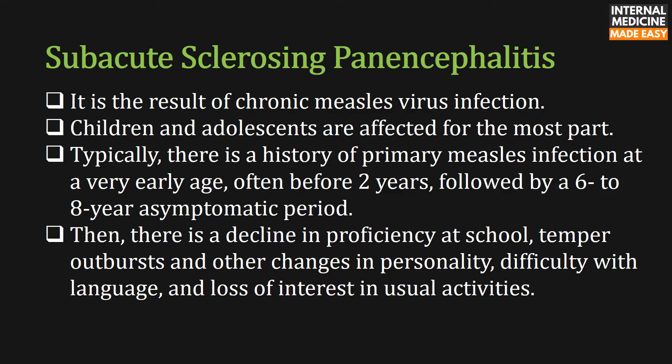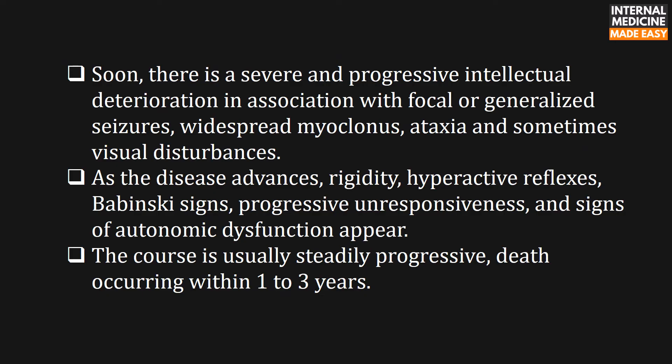It is the result of chronic measles virus infection. Children and adolescents are affected for the most part. Typically, there is a history of primary measles infection at a very early age, often before two years, followed by a six to eight year asymptomatic period. Then there is a decline in proficiency at school, temper outbursts, and other changes in personality, difficulty with language, and loss of interest in usual activities.